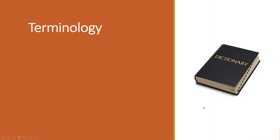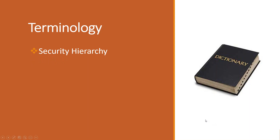First, we're going to start off with some terminology. We're going to cover security hierarchy, which is when multiple security records exist, the system will apply the security by following the existing security hierarchy. The STAR public role, which is a special role assigned to all users that determines the default access in the system.